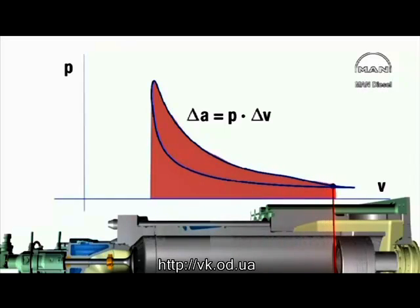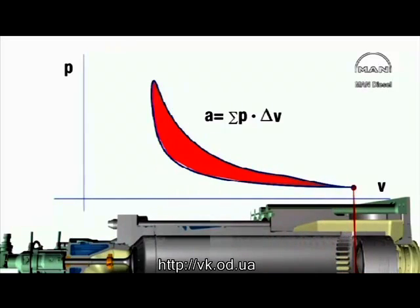In other words, it's given by the area between the curves. Thus, A equals sigma P multiplied by delta V.